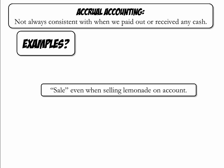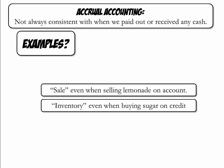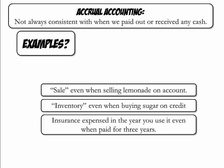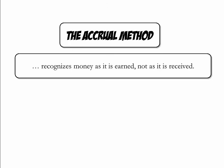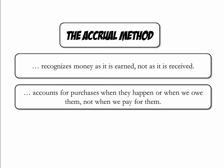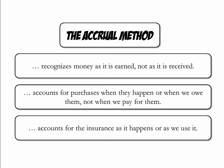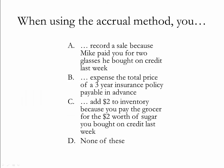We considered it a sale when your customers purchased a glass of lemonade on account. We counted goods under inventory even when you purchased those goods on credit. We expensed your insurance in the year you use it, even though you paid for three years in advance. The accrual method recognizes money as it is earned, not as it is received. It accounts for purchases when they happen or when we owe them, not when we pay for them, and accounts for insurance as it happens or as we use it. This concludes the lecture on Week 2 of our Lemonade Stand Accounting Lecture Series.